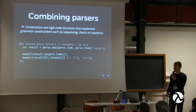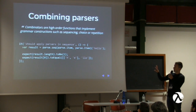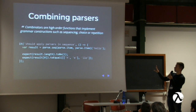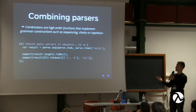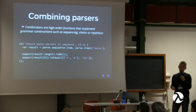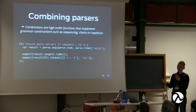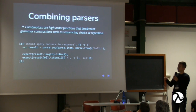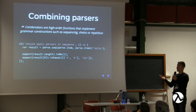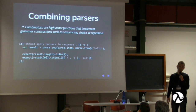For example, we sequence two item parsers together. Given the string 'hello', the first item parser consumes 'h' and leaves 'ello'; the remainder 'ello' is then given to the second item parser. The final result is a singleton array where the parsed value is ['h', 'e'] and the remainder of the string is 'llo'.